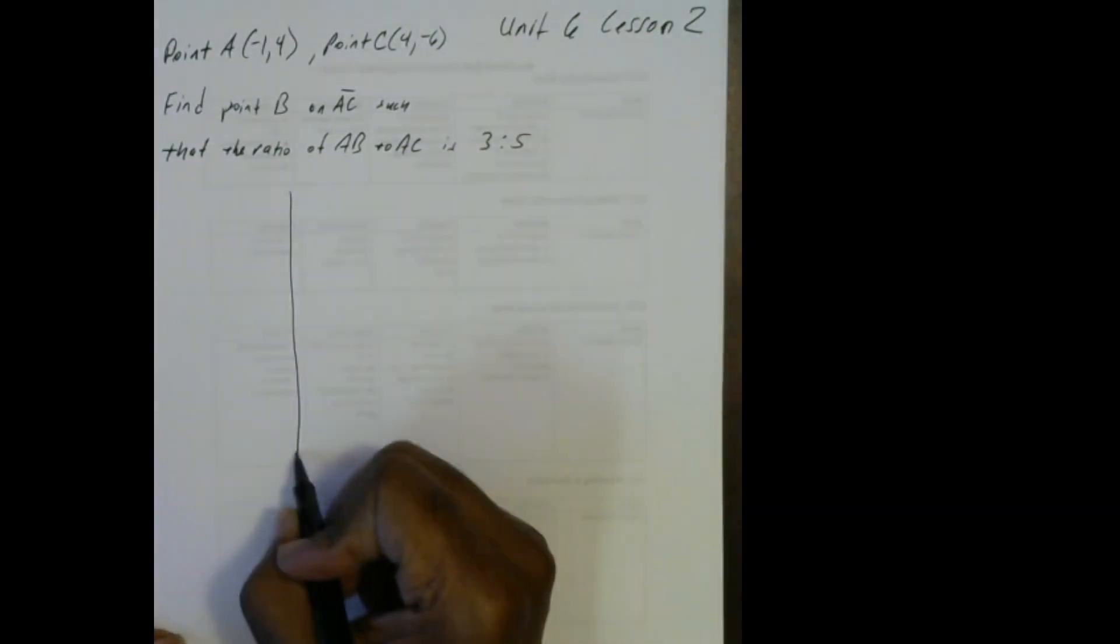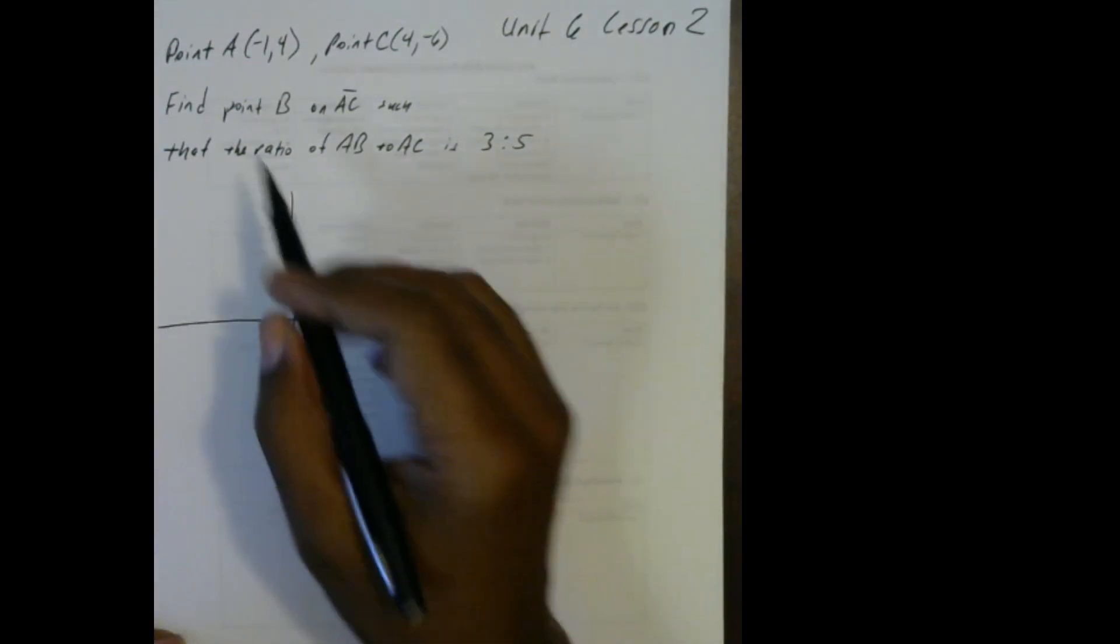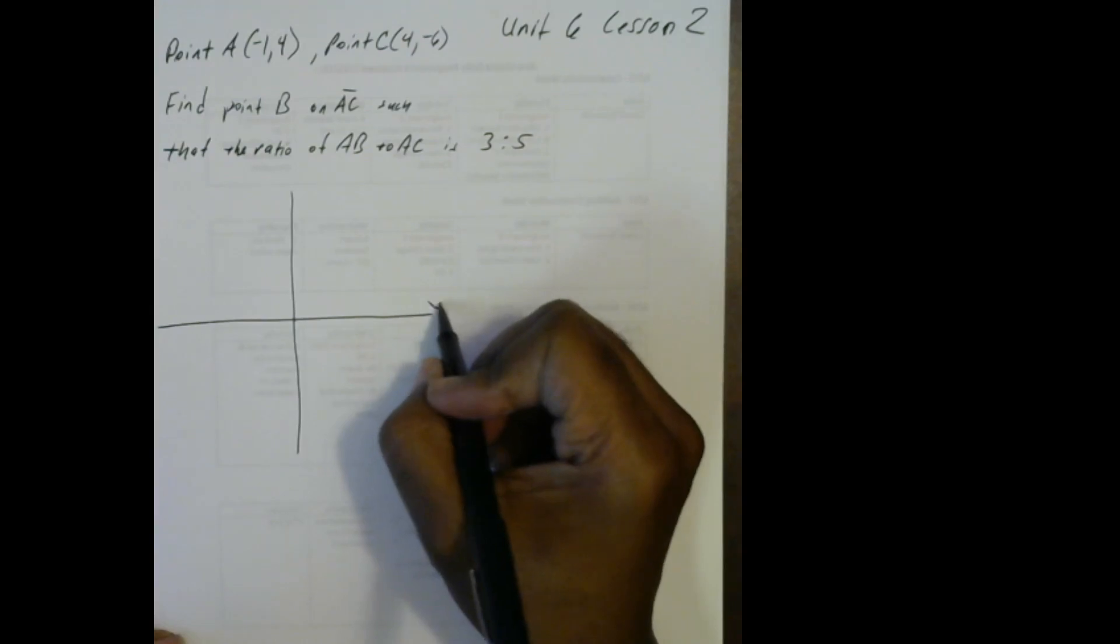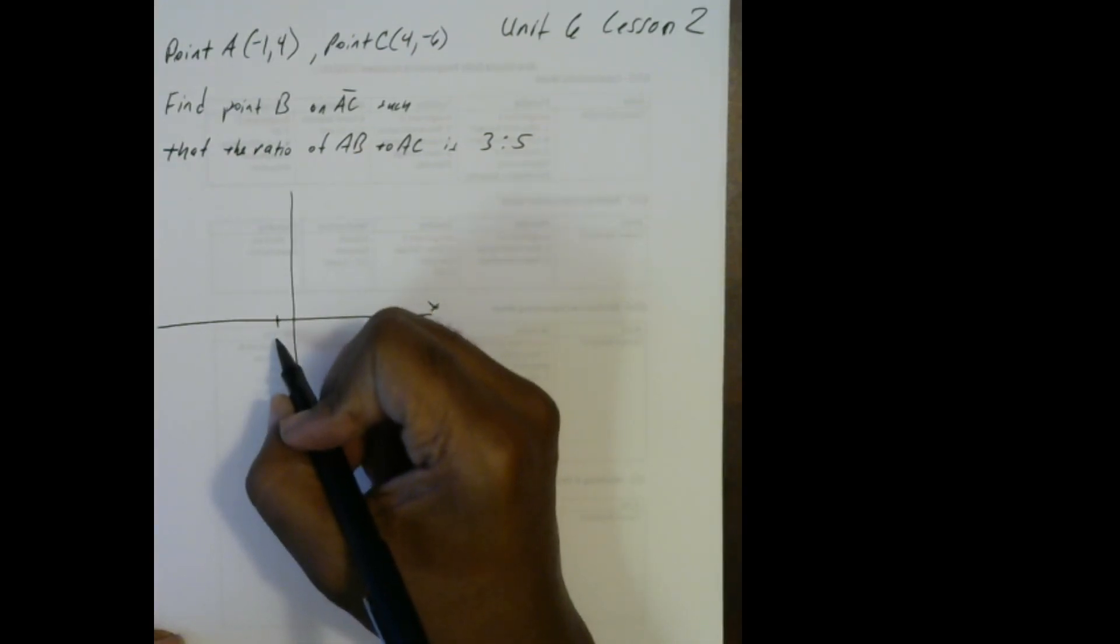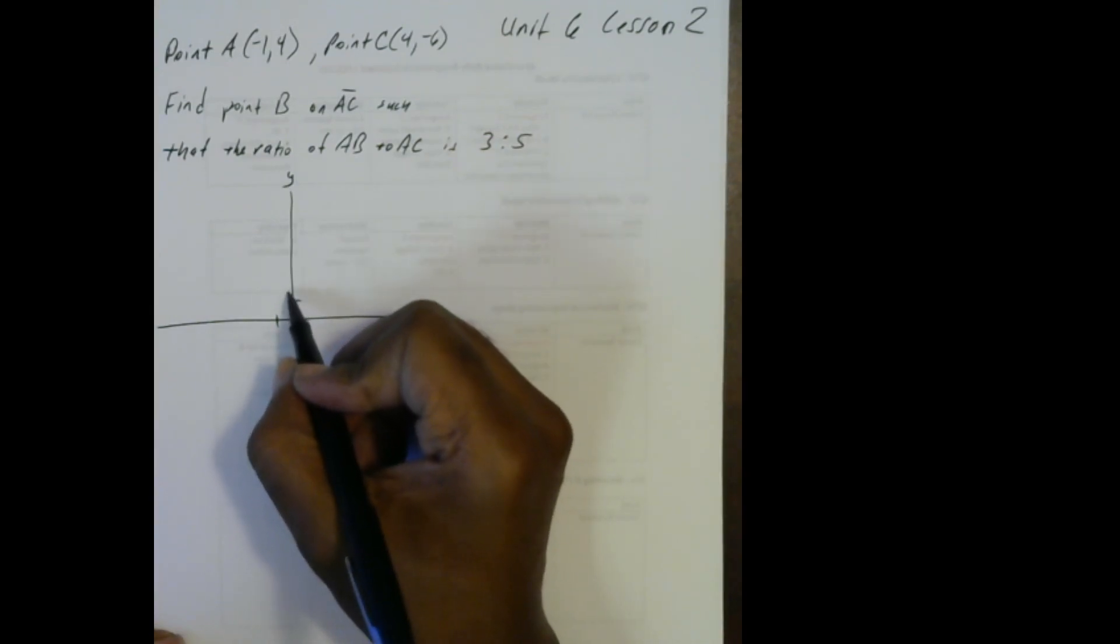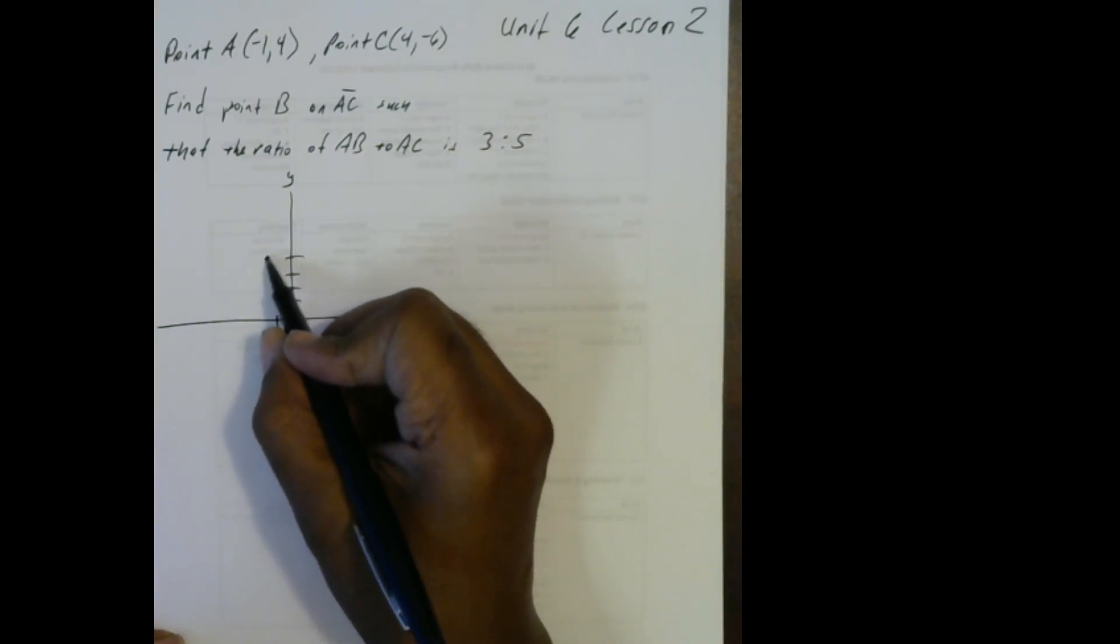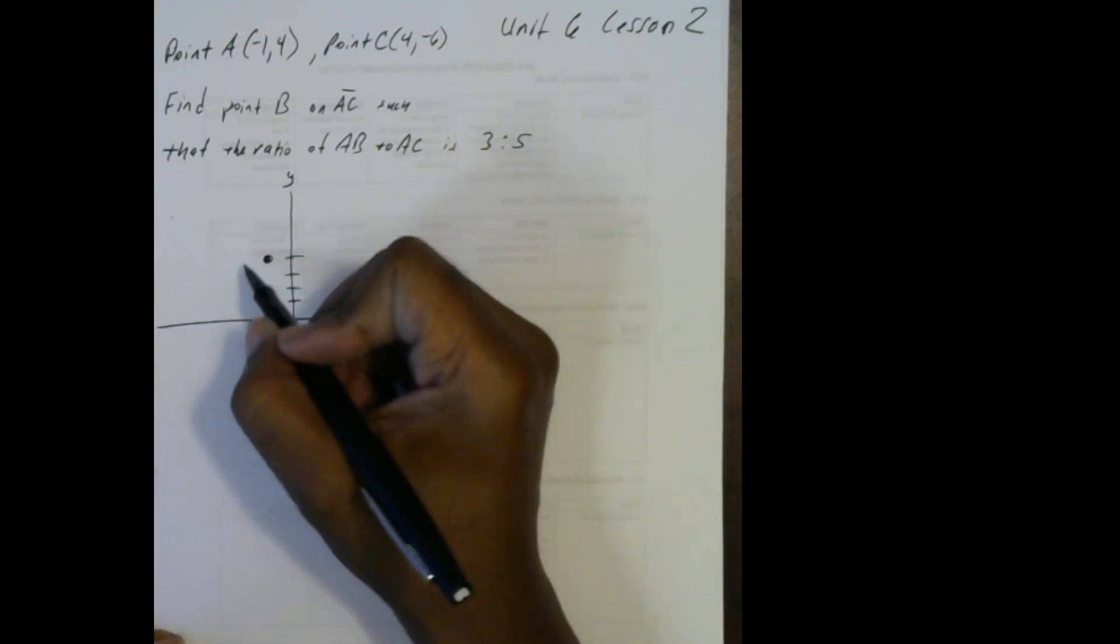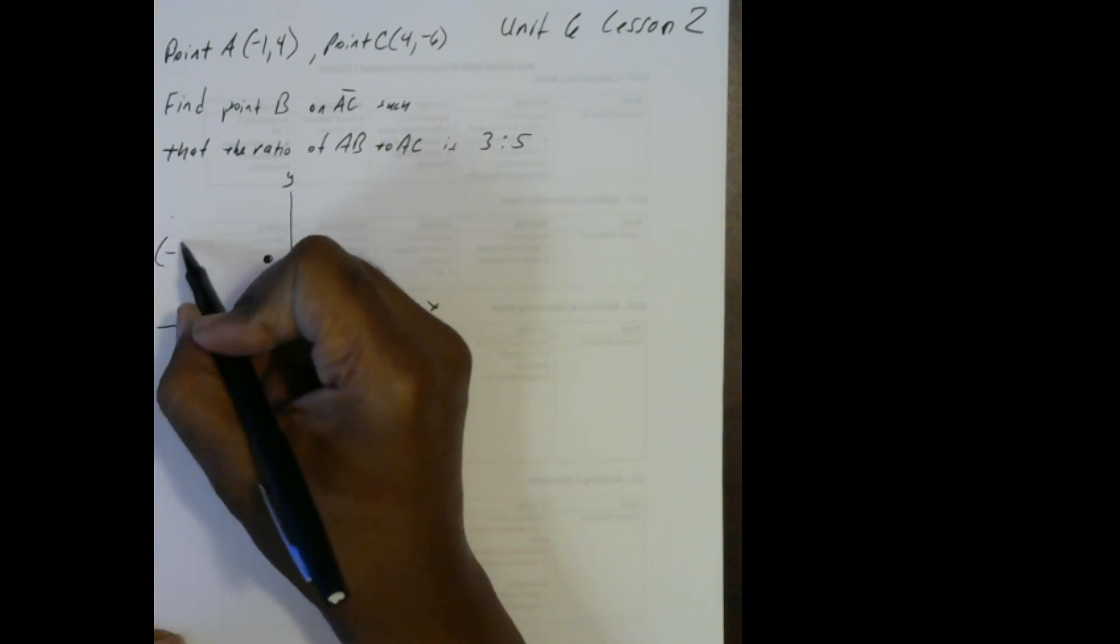Let's go ahead and draw what's happening here. First we have point A located at negative 1, 4, so that's back 1 on the x-axis and 4 on the y-axis. 1, 2, 3, 4. That's point A right there at negative 1, 4.